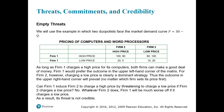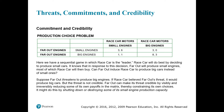As long as firm one charges a high price for its computers, both firms can make good money. Firm one would prefer the outcome in the upper left corner of the matrix — 180 for firm two. However, charging a low price is clearly a dominant strategy, so the outcome in the upper right corner prevails. No matter what, if firm one charges a low price, firm one will be much worse off. As a result, its threat is not a credible threat.